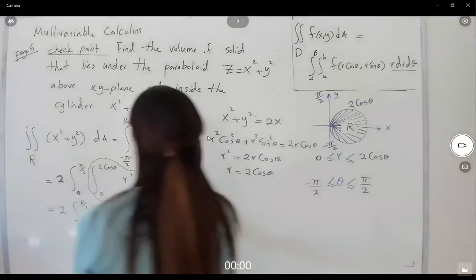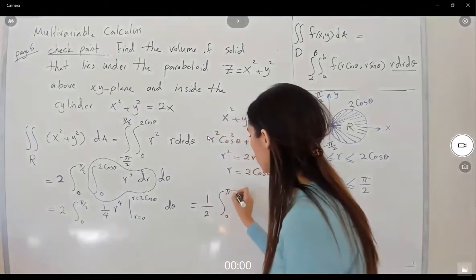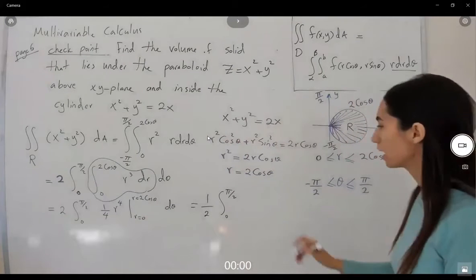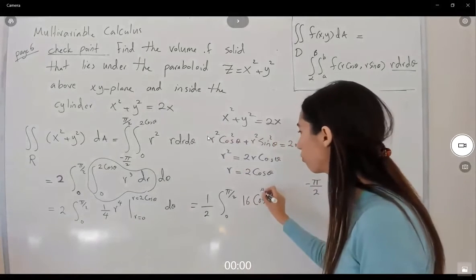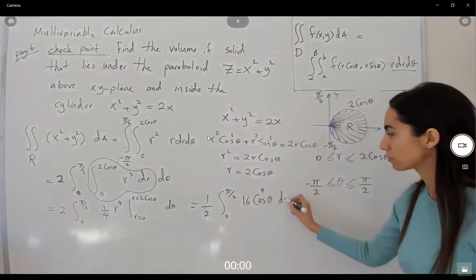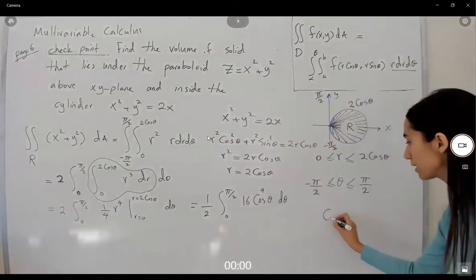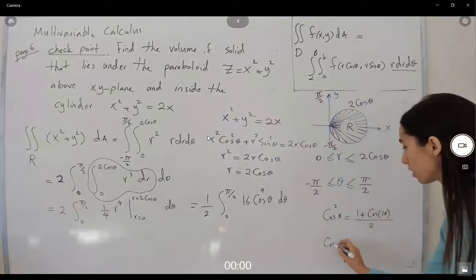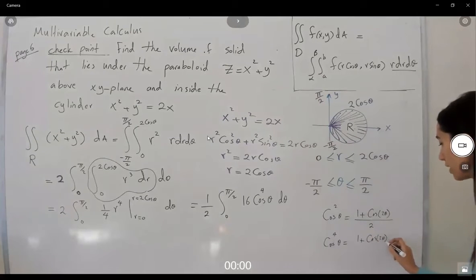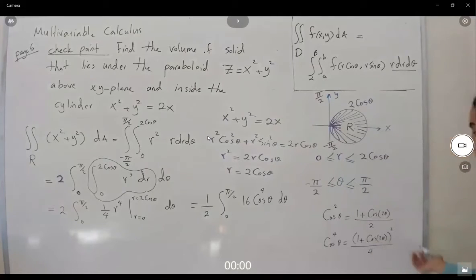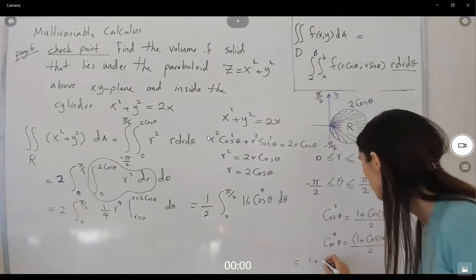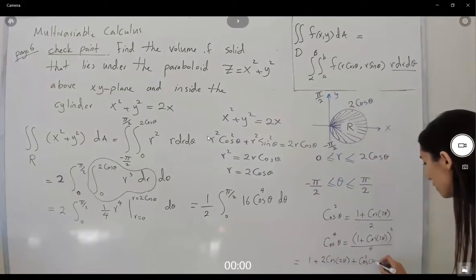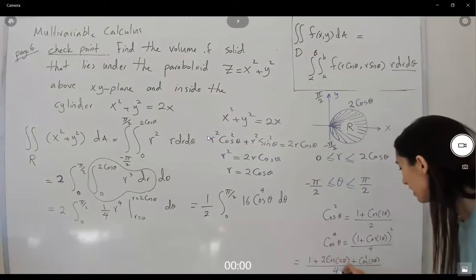Simplifying, we get one half times the integral from 0 to pi over 2 of 16 cosine to the fourth theta dθ, which equals 8 times the integral from 0 to pi over 2 of cosine to the fourth theta dθ. Recall that cosine squared theta equals (1 plus cosine 2 theta) over 2, so cosine to the fourth theta equals (1 plus cosine 2 theta) squared over 4. Expanding: 1 plus 2 cosine 2 theta plus cosine squared 2 theta, all over 4.